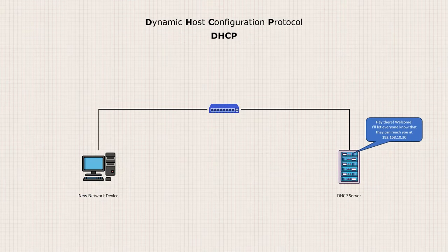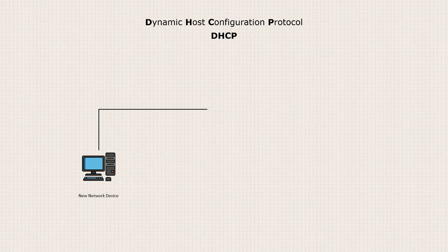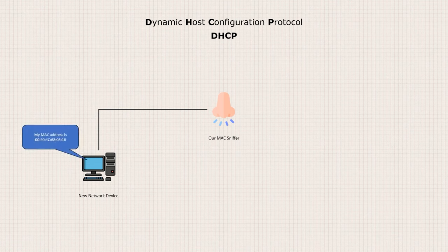Now that we know what we want to do, we will program our development board to listen for DHCP broadcast queries. When it receives one, it will parse the provided information and extract the MAC address. Finally, it will display that MAC address on the screen as human-readable text and as a QR code.